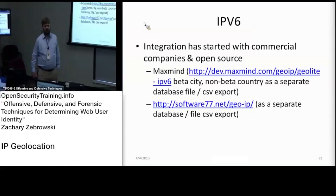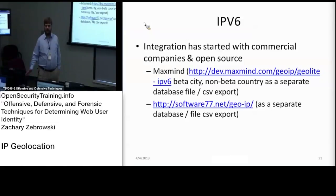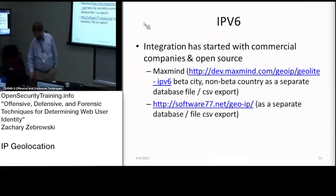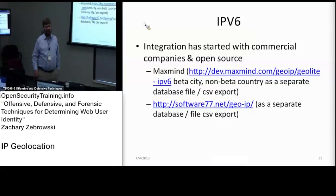IP version 6 is slowly being integrated. It's more prevalent in Japan and other Asian countries than in the US right now, and that's a known issue for IP geolocation. The service providers are providing betas of IPv6 geolocation. If you come across an IPv6 IP address, it's generally being routed through an IPv4 firewall right now. If you do actually have IPv6 addresses in your logs, you have to go to a whole separate file that will probably be out of date. Generally, it's only in those Asian countries that you'll see IPv6 addresses being used right now.